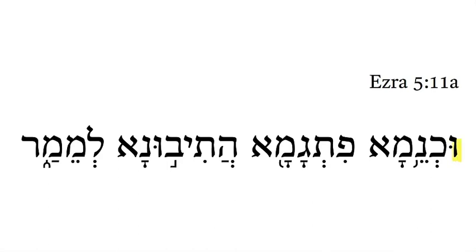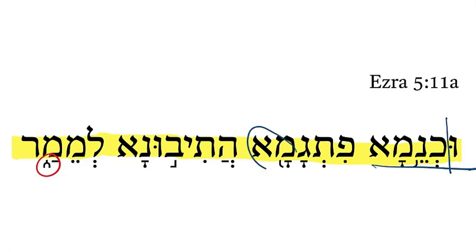Ezra 5:11a: ukanema fitkamah hativunah l'maymar. And that brings us to the atnach of the verse, so back to the beginning. Conjunction — this word means 'accordingly,' so 'and accordingly.' The reply — that's pitkam — the reply.